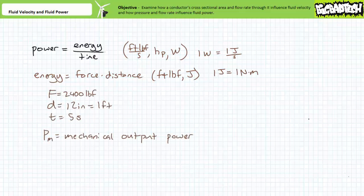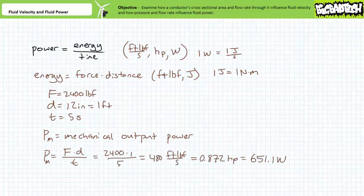Given a 2,400-pound weight lifted 12 inches in five seconds, we can calculate that the mechanical power exerted is approximately 480 foot-pounds force per second — roughly equivalent to 0.872 horsepower, or approximately 651.1 watts. However, if one was only capable of observing fluid properties — namely pressure and flow rate — one would have to go through a tedious series of calculations to arrive at this value.